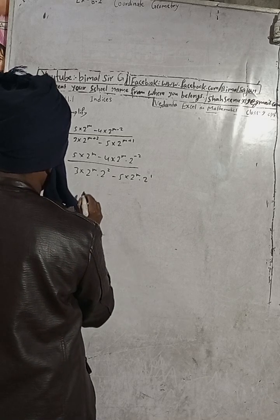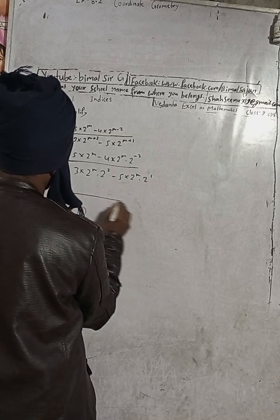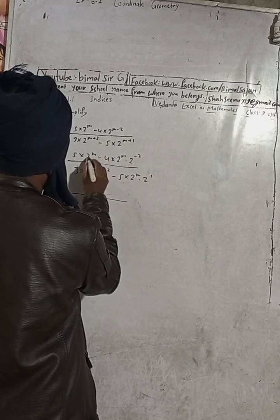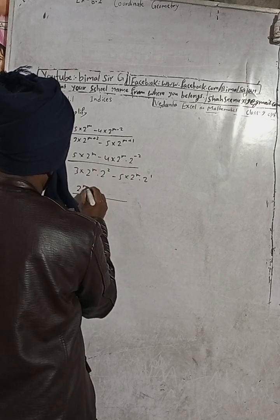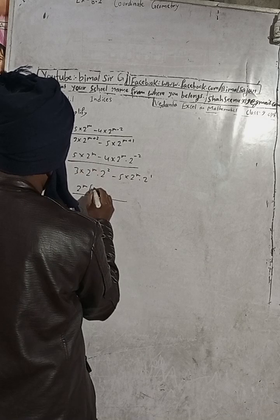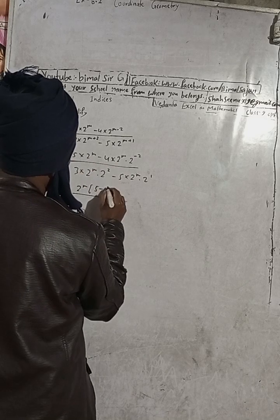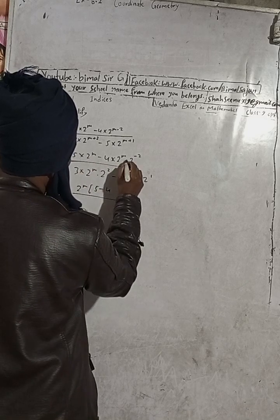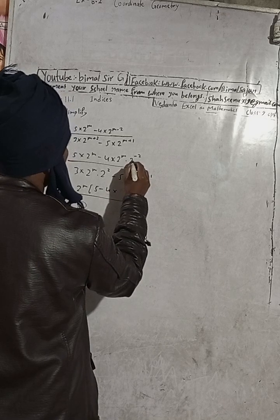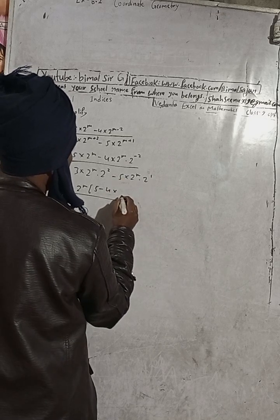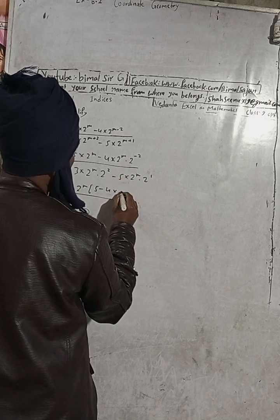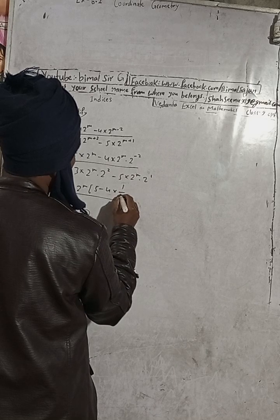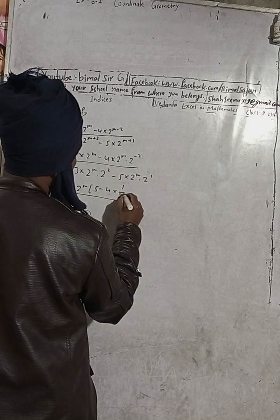You can see here now common. Here is common 2 to the power 1. So take a 2 to the power 1 common. Remaining here 5 minus this is 4. And then this is into 2 to the power minus 2 means it can be written as what here? 1 by 2 to the power 2 square in the downside.